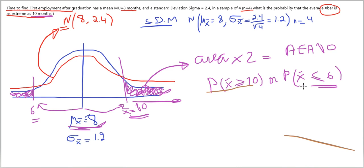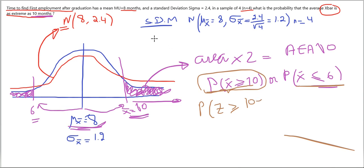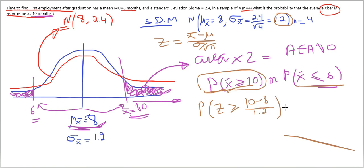This translates into P(Z ≥ z), where I apply the formula: Z = (X̄ − μ) / (σ / √n). So Z = (10 − 8) / 1.2. That gives us P(Z ≥ 2/1.2). Computing 2 divided by 1.2 gives 1.67, so we need P(Z ≥ 1.67).